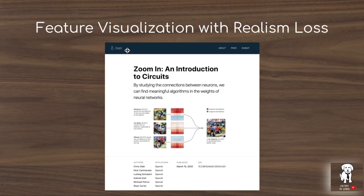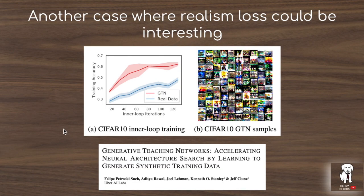A really interesting characteristic of this paper is that you can do feature visualization while still having a natural-looking image. Another setting where this realism loss could be interesting is in the Generative Teaching Network framework — a new meta-learning algorithm where the meta-learning controller tries to design a dataset that can quickly train a neural network to perform well on CIFAR-10, MNIST, and other datasets. The images that come from Generative Teaching Networks don't make any sense visually to us, so it might be interesting to add the realism loss to that framework as well.